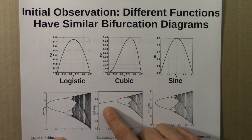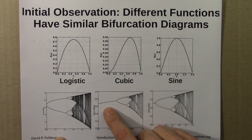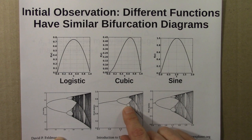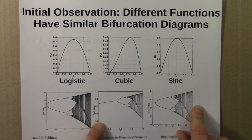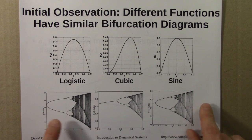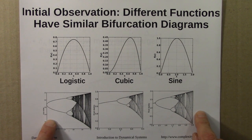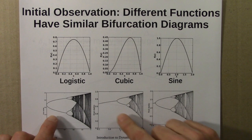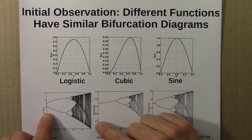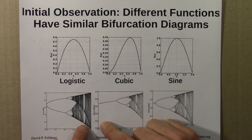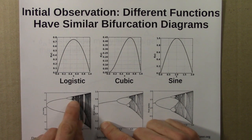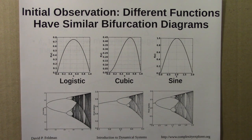In particular, we see this period doubling structure occur again and again across different bifurcation diagrams, and also within the same bifurcation diagram, we see period doubling at different points.